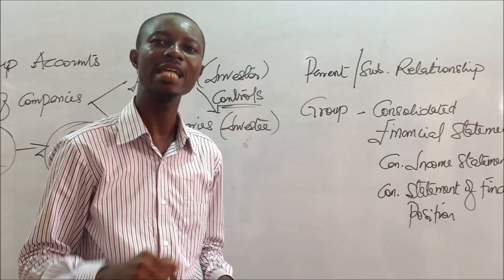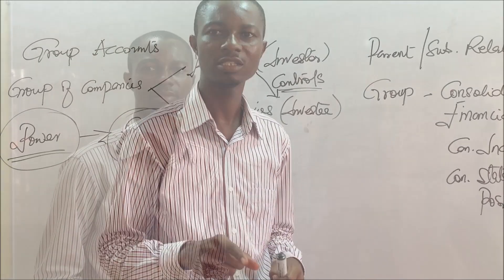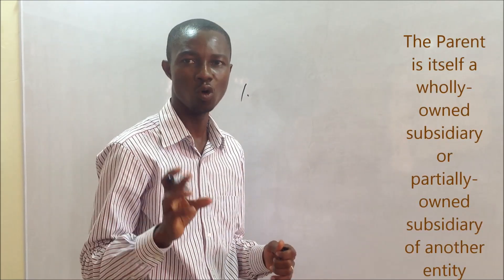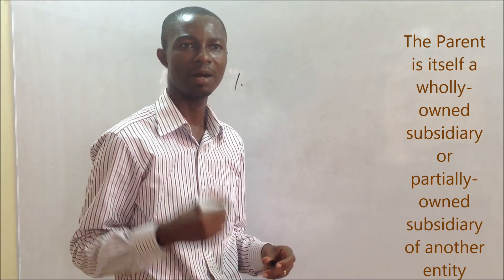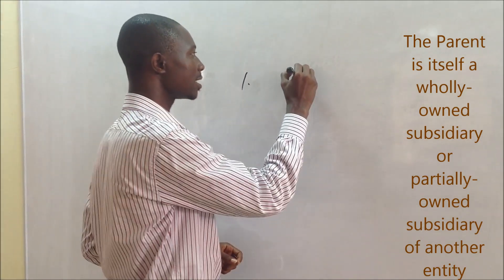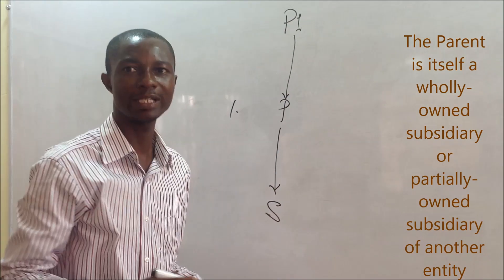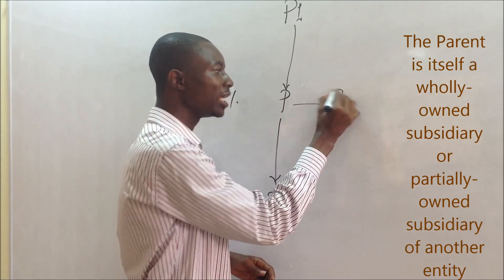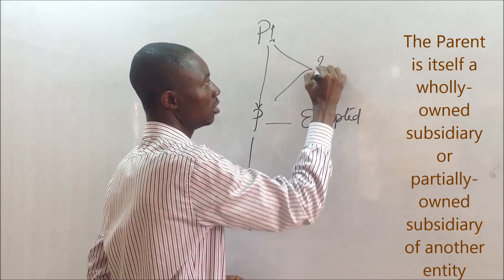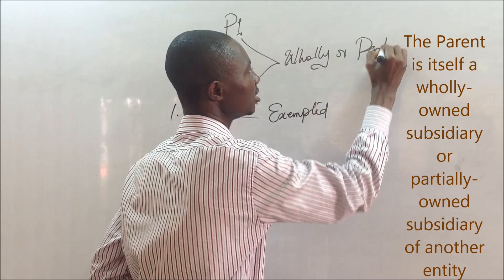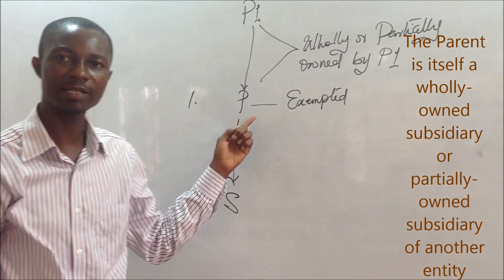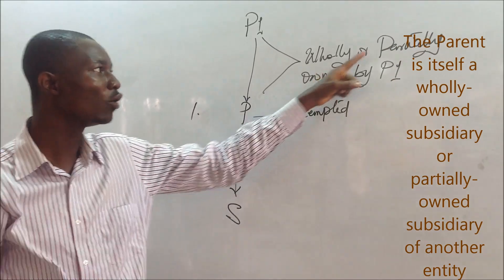Let's look at the instances under which parents may be exempted from the preparation of consolidated financial statements. A parent may be exempted when, first, the parent is itself a wholly owned or partially owned subsidiary of another entity. For example, if we have a parent P which has a subsidiary S, but P itself also has another parent — let's call it P1 — then P would be exempted from the preparation of consolidated financial statements because it is wholly or partially owned by P1.